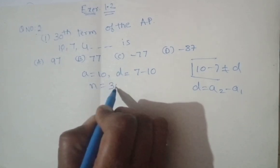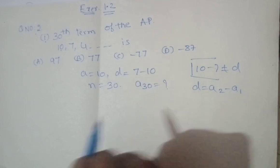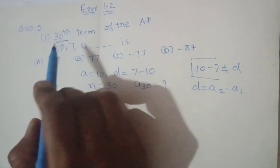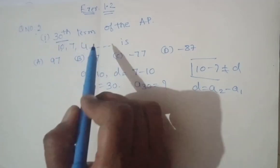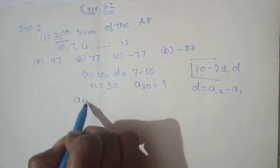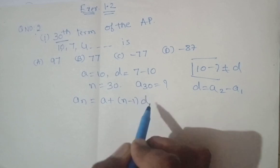Then n equals 30. You need to find a_30, the 30th term. You need to find the number at the 30th place and then check the options. So we have the formula: a_n equals a plus (n minus 1) times d. Simple formula.